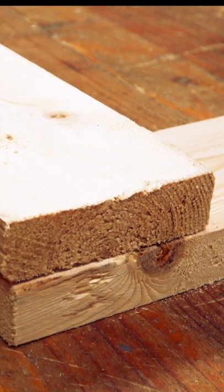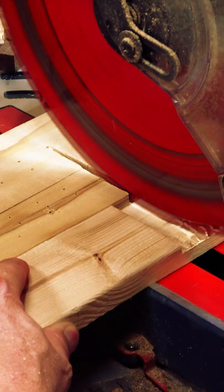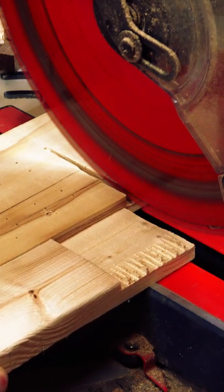These joints can be either full lap, which just means attaching one board to the next, or half lap, where equal parts material are cut out before combining the two.